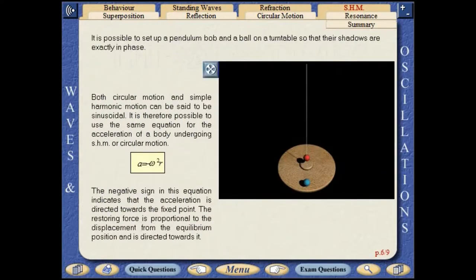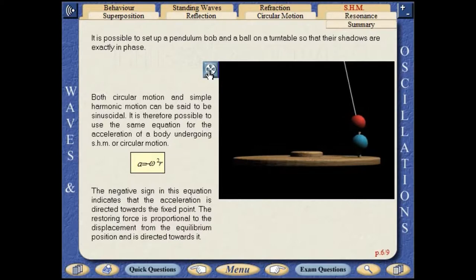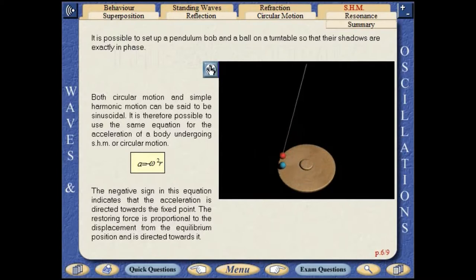It is possible to set up a pendulum bob and a ball on a turntable so that their shadows are exactly in phase. Both circular motion and simple harmonic motion can be said to be sinusoidal. It is therefore possible to use the same equation for the acceleration of the body undergoing simple harmonic motion or circular motion.